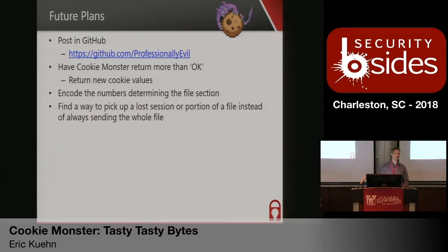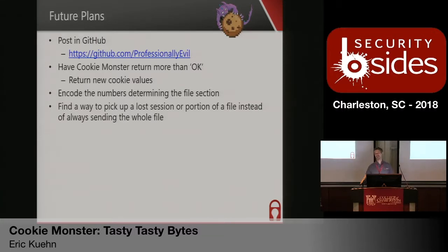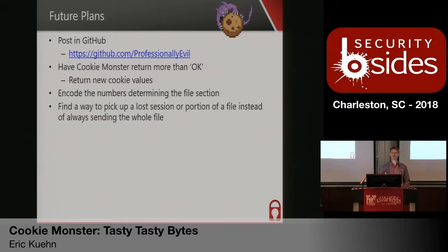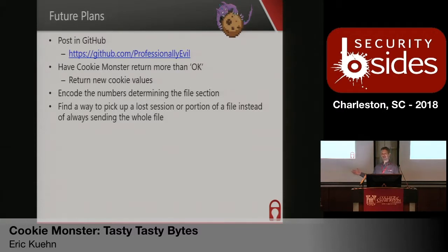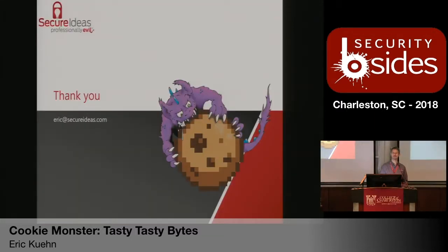We do have some future plans — right now it's not posted, but we are going to post Cookie Monster in our Professionally Evil org. We want it to actually return data so it looks like people are browsing something, maybe return some new cookie values. We want to change the encoding so the part number — 'I'm part one of 16' — is also encoded. And we want to find a way to pick up a lost session. Cookie Monster may not be the best tool out there, but it was something we came up with to try and address this part of the test that's probably not done very often. Even if you don't do pen testing yourself, hopefully you can encourage companies to start testing whatever they have preventing data exfiltration. Everybody is focused on preventing people from getting in — we need the same focus on whether they can get data out.